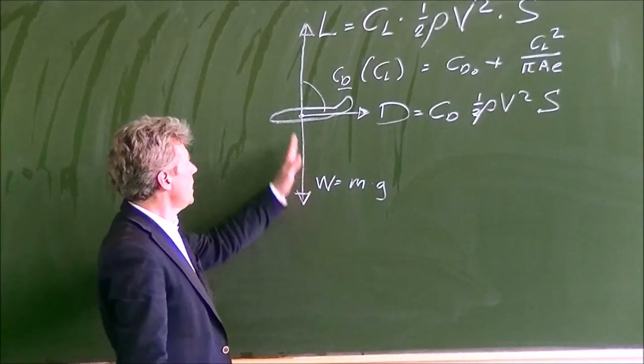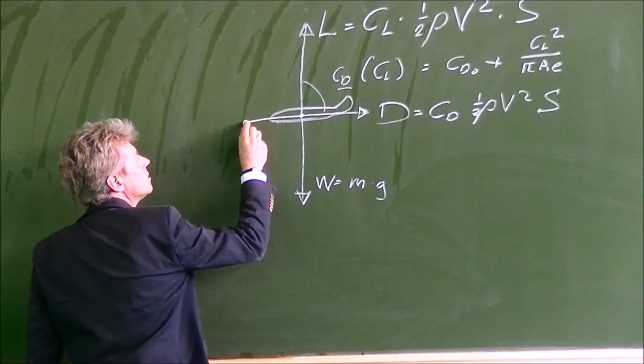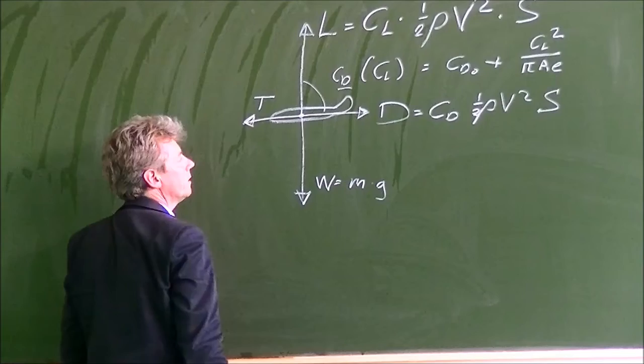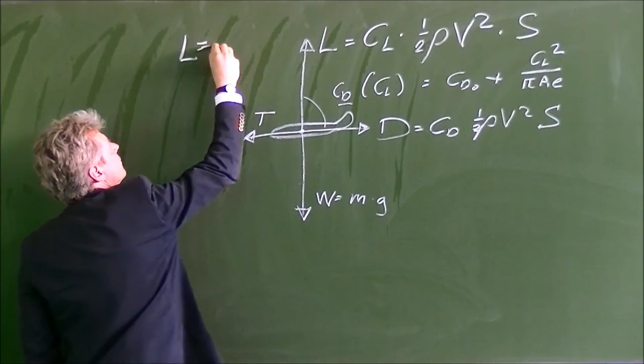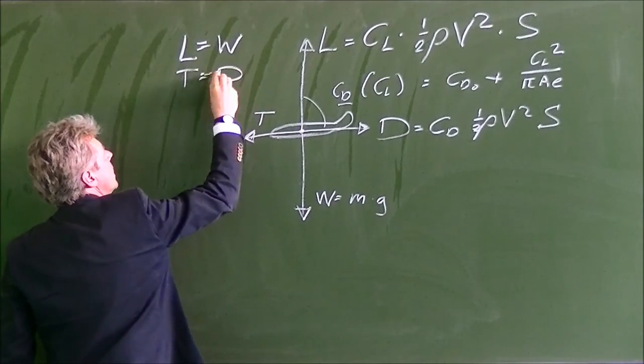The CD as function of CL is given for instance CD0 plus CL squared divided by pi times the aspect ratio times the Oswald efficiency. And this way we get the CD which allows us to calculate the drag force which is the same equation as the lift but then with the drag coefficient. So times the dynamic pressure, half rho V squared times the wing area. So if we go from weight to lift to drag then we also have solved the last force which is the thrust force because that's equal to the drag. In stationary flight as lift is equal to the weight, the thrust is equal to the drag.